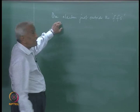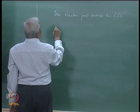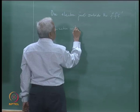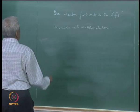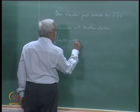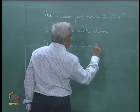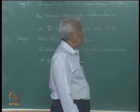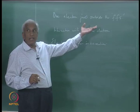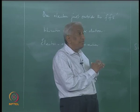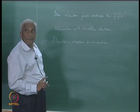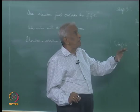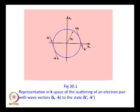Cooper considered the interaction of this electron just outside the Fermi sea with another electron. This electron-electron interaction between one pair of electrons — just two electrons — is what is shown in the figure. These two electrons are taken just outside because if they were inside the filled Fermi sea they cannot interact; they cannot go into another state because of the Pauli principle. They just interact between themselves such that all states inside the sphere of radius k_f are filled and not available.